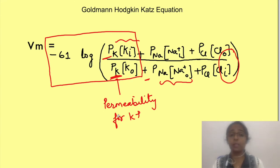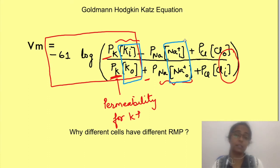Okay, now can you tell that why different cells have different RMP? Well, different cells have different concentration gradient for different ions and also the membrane permeability of the different cells varies for different ions. So obviously if you put the values in GHK equation, RMP will come different for different cells, isn't it?